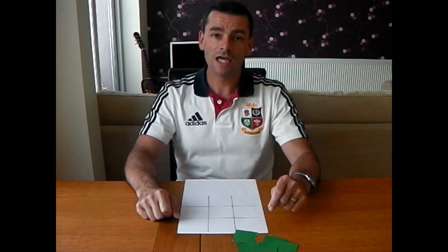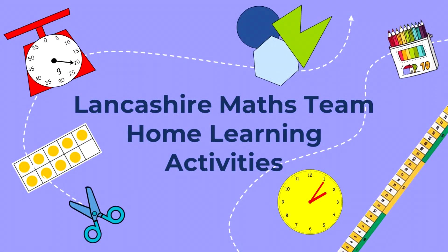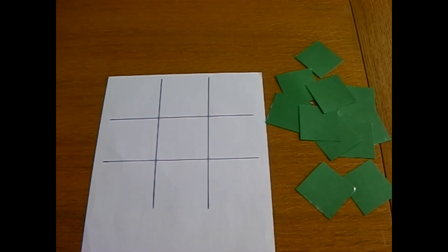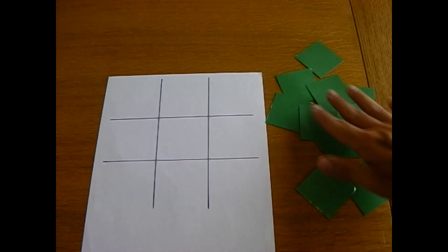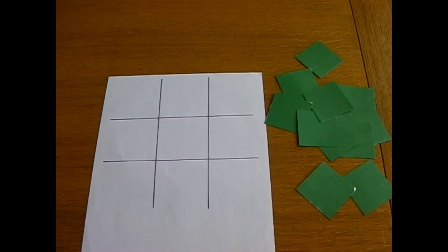Here we have number noughts and crosses version 2 for year one children. I've got the number cards 0 to 10 cut out and laid face down.